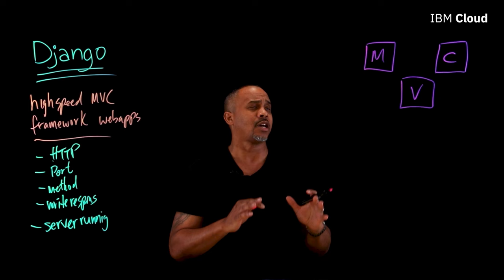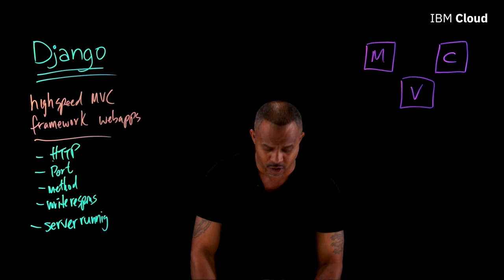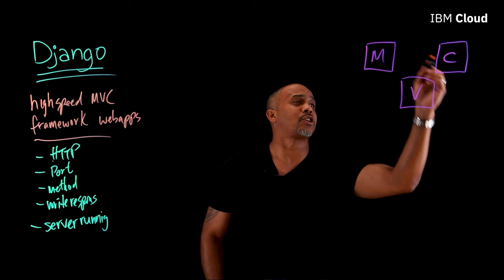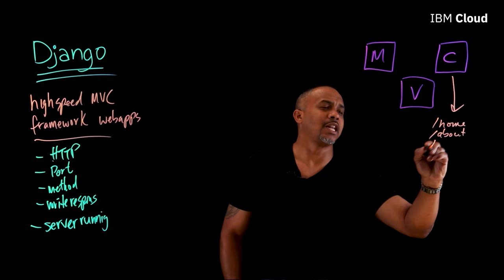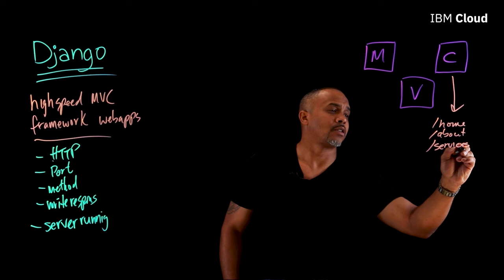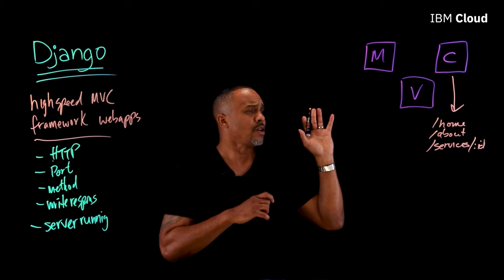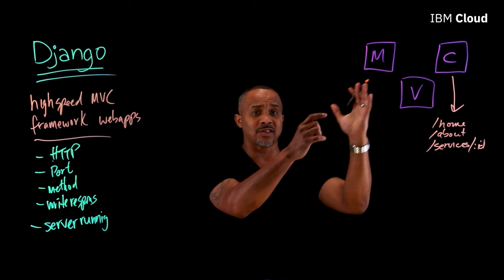In terms of working with Django, the controller is going to give you an interface to define all your routes — slash home, slash about, and even some dynamic URLs if you have those, like services and an ID, anything dynamic that can be substituted. Those will all be defined in one specific file — one place to go, one place to edit. And as the controller does its job, it passes the request off to the view.